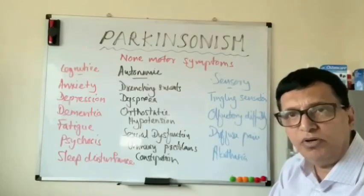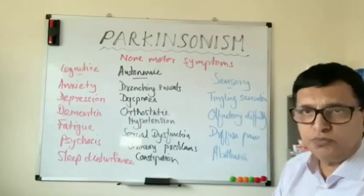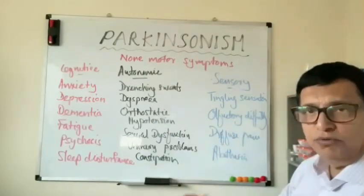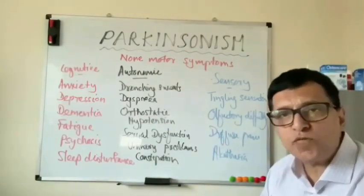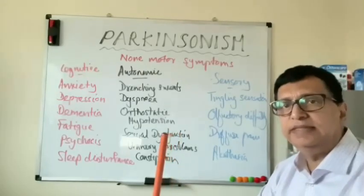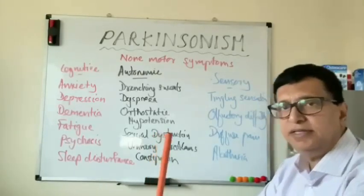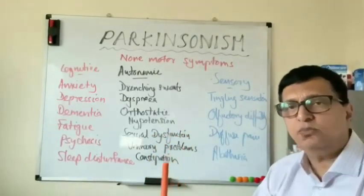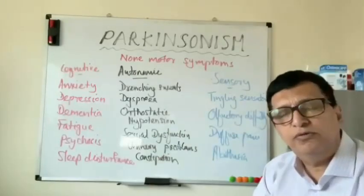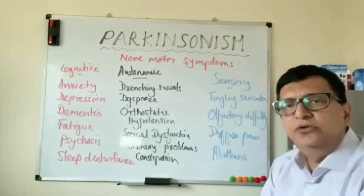Sensory symptoms include tingling sensation all over the body, olfactory difficulties — loss of smell, which is also an early feature of Parkinsonism — diffuse pain all over the body, and akathisia. Akathisia means the patient can't stay in one place; they have an urgency to move even though they can't initiate movement, and once they initiate movement they can't stop. These are the non-motor symptoms of Parkinsonism.